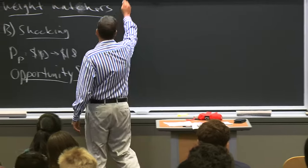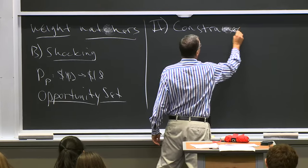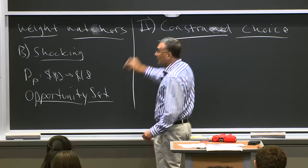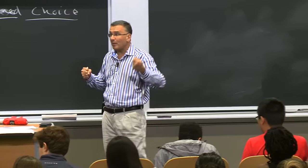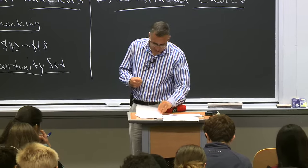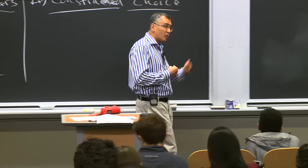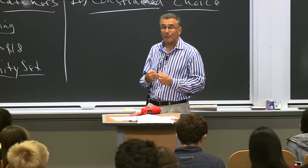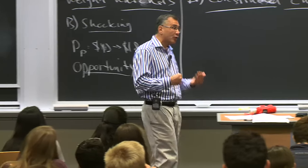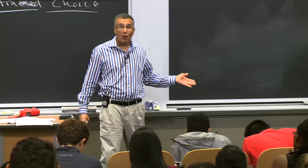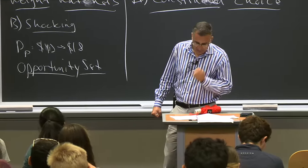Let's turn to the second part: how we use budget constraints and the utility function to describe how consumers make choices. Consumers maximize utility subject to a budget constraint. The graphical representation of preferences is indifference curves — further-out curves make people happier. So we ask: what is the highest indifference curve you can achieve given your budget? We'll use the utility function U = sqrt(P × C) with the same budget: $72 income, $12 pizza, $6 cookies.